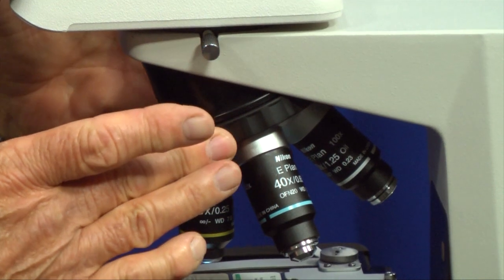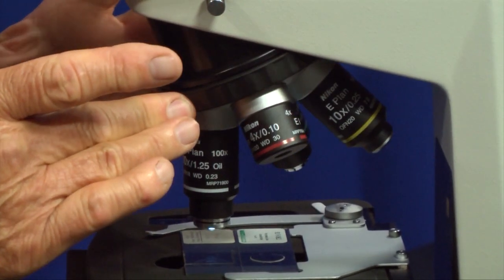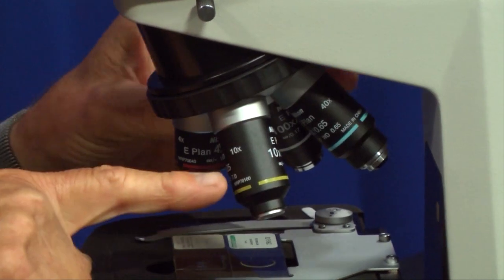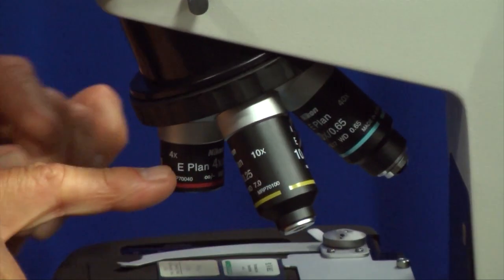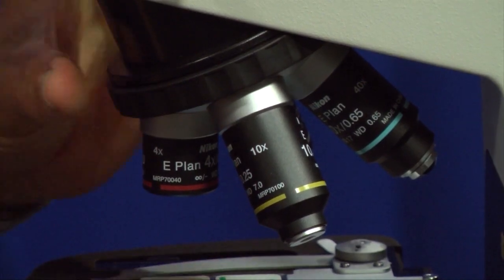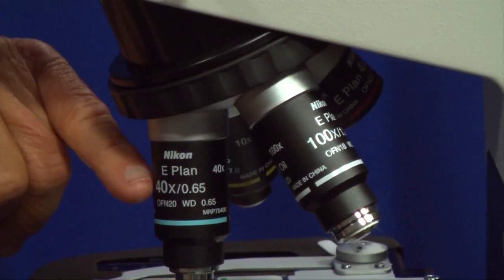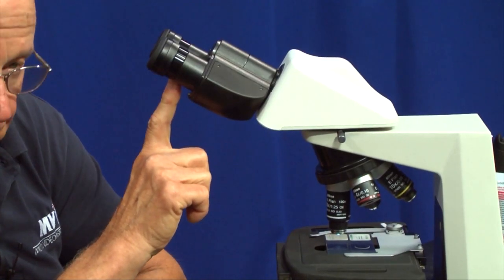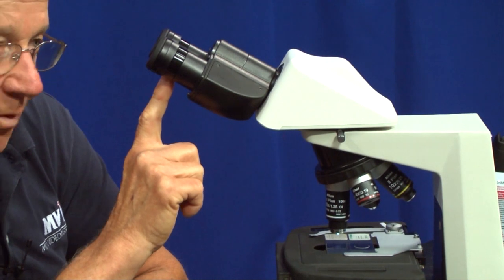We're going to talk about the nose piece of the microscope. This is the device that allows us to attach the microscope objectives to the microscope. This is the primary imaging lens of the microscope, called the objective. On this microscope, as on most biological microscopes you'd find in a university or hospital laboratory, the magnifications are the 4x objective, 10x objective, 40x objective, and 100x objective. That isn't the total magnification. The total magnification is the objective magnification times whatever eyepiece you're using. Most microscopes come with 10x wide field eyepieces.